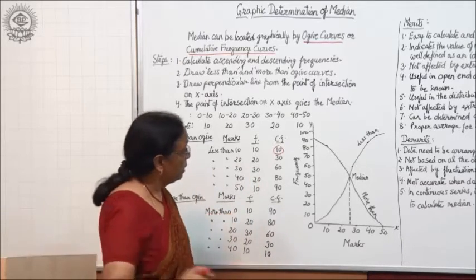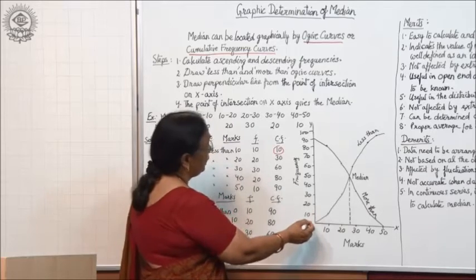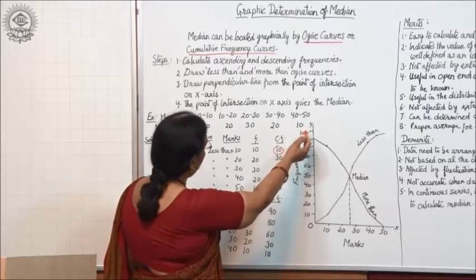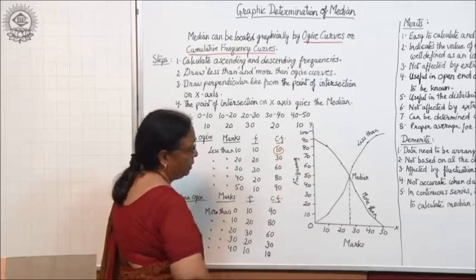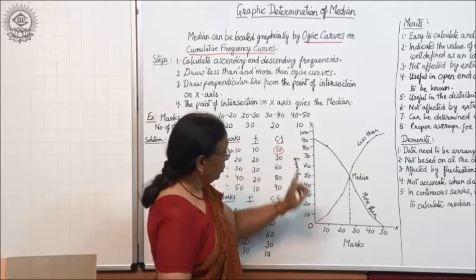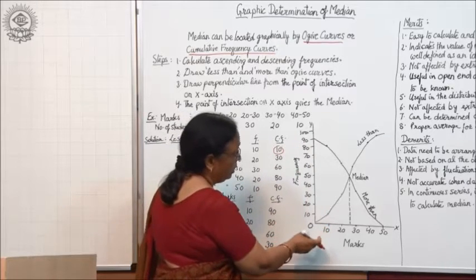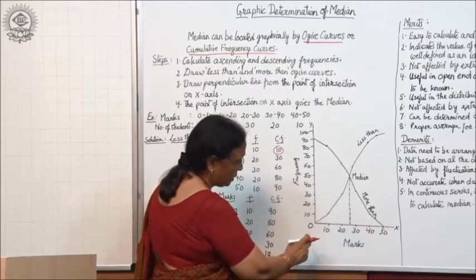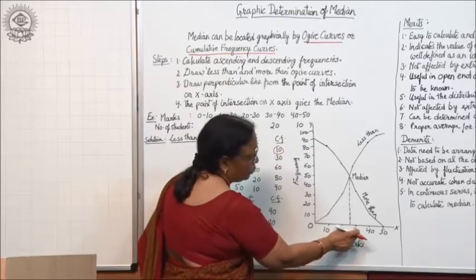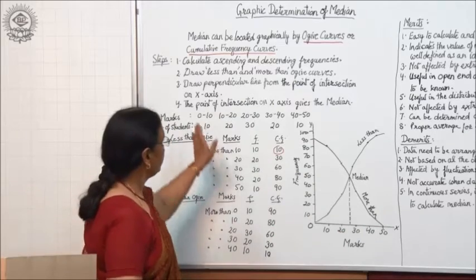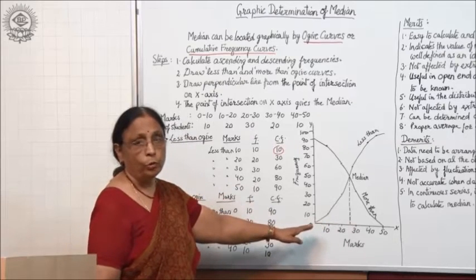The next step is to draw the diagram or graph. On the y-axis, take a scale up to 100 since 90 is the maximum frequency, and divide it equally into intervals of 10. On the x-axis, take marks ranging from 0 to 50 and divide it equally into five parts. Always take frequency on the y-axis and marks on the x-axis.